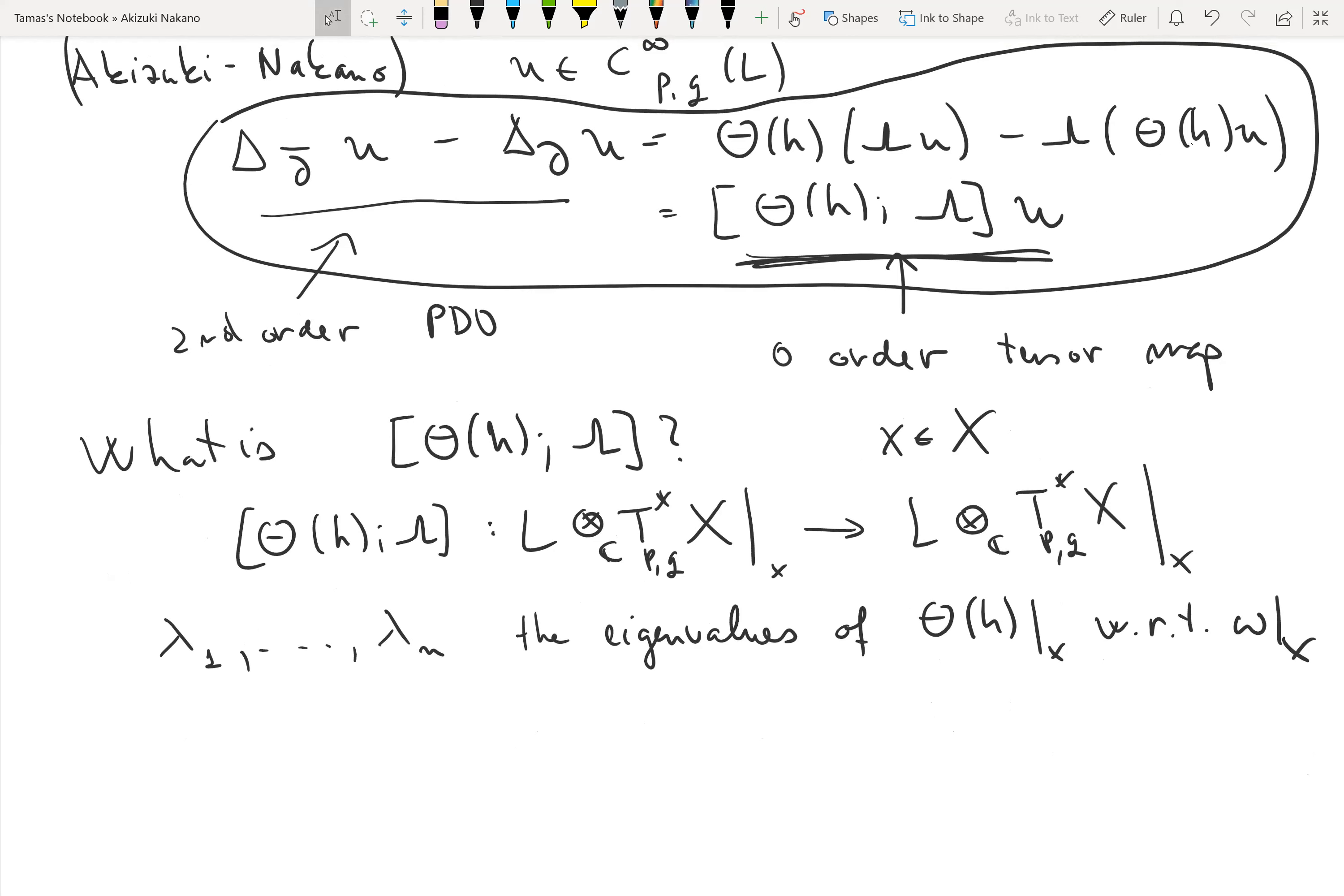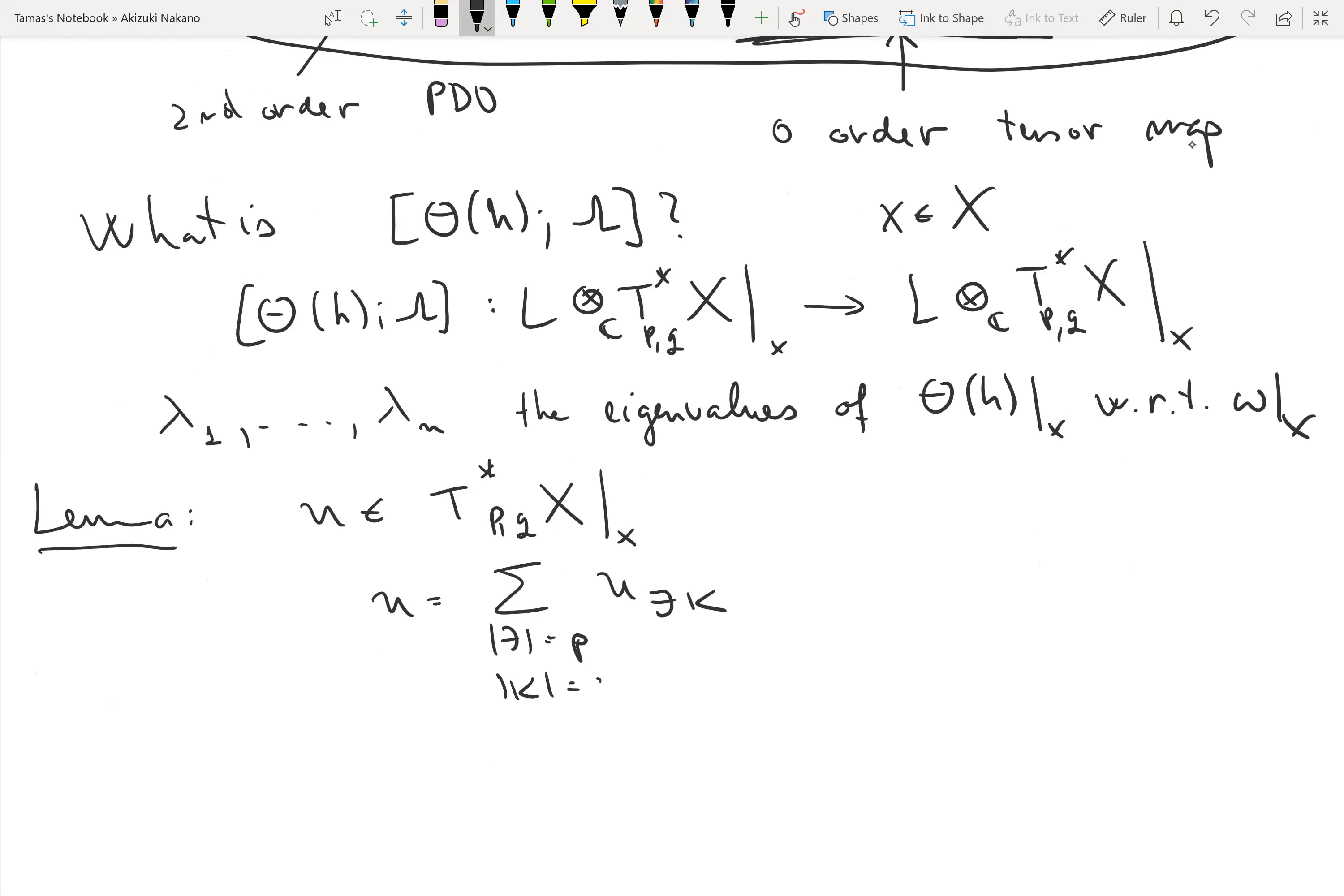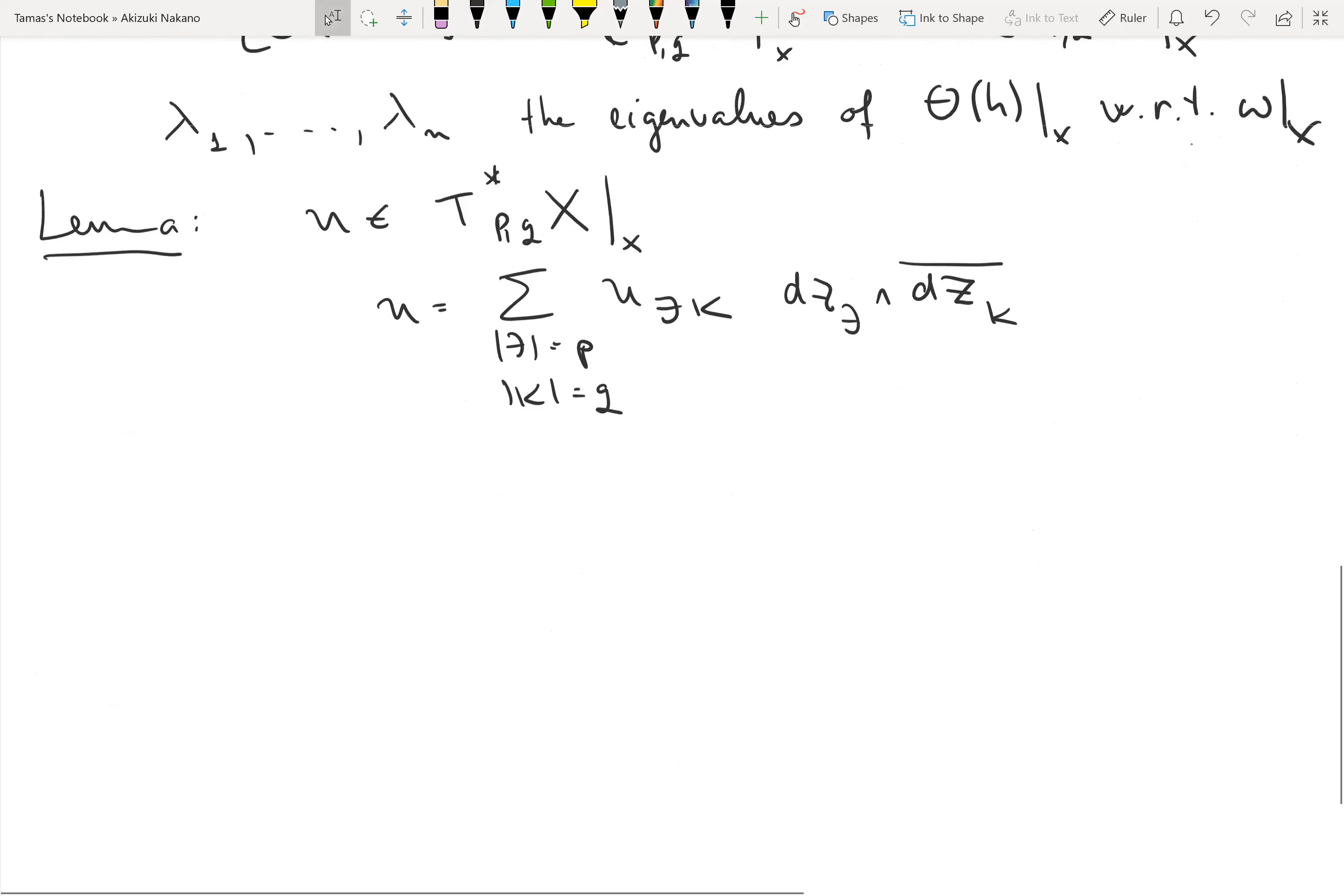There's the following lemma whose proof is essentially careful linear algebra. If one picks u, a p,q form at x, then u can be written as u_{J,K} where J has length p, K has length q, times dz_J wedge dz_K bar.